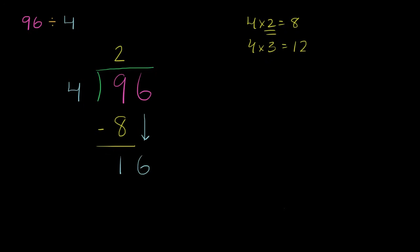And then we ask ourselves, how many times does 4 go into 16? Well, in this case, we know that 4 goes into 16 exactly 4 times. 4 times 4 is 16. So we say 4 goes into 16 four times. Then we multiply, 4 times 4 is 16. We subtract, and 16 minus 16, we have absolutely nothing left over.